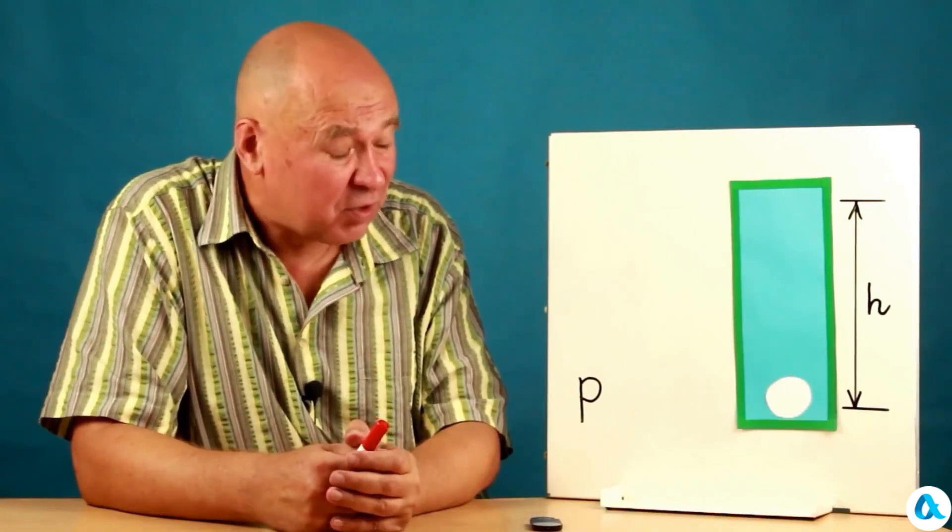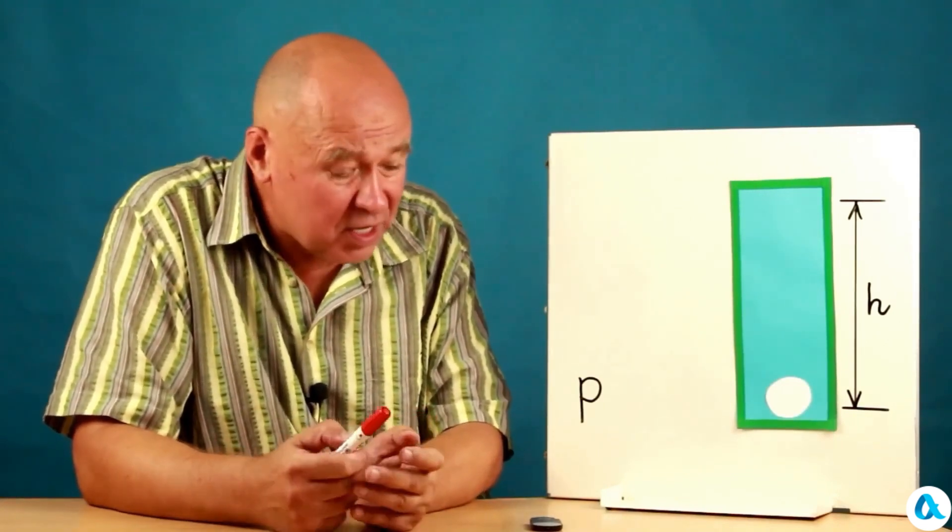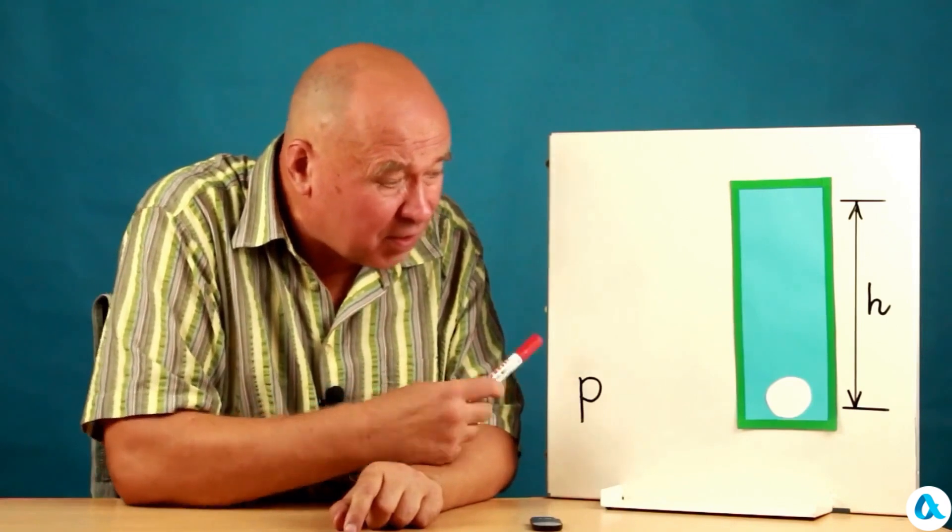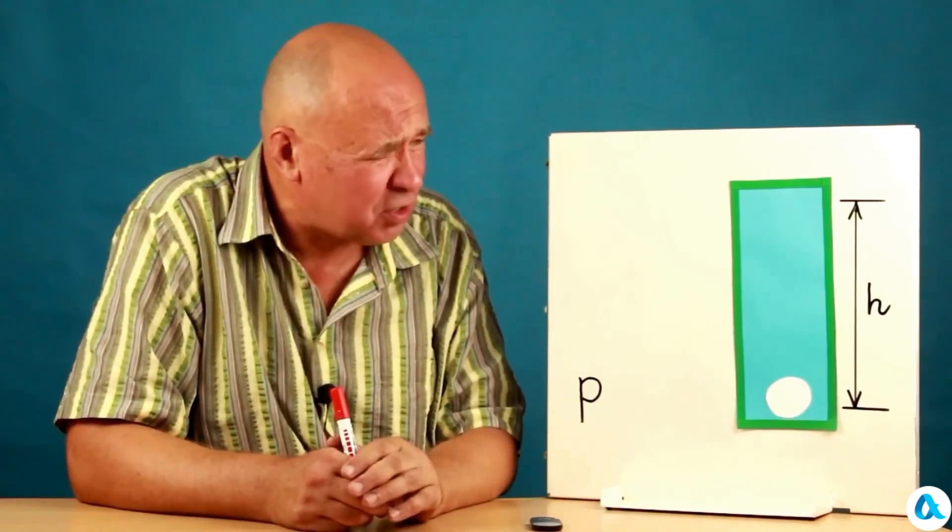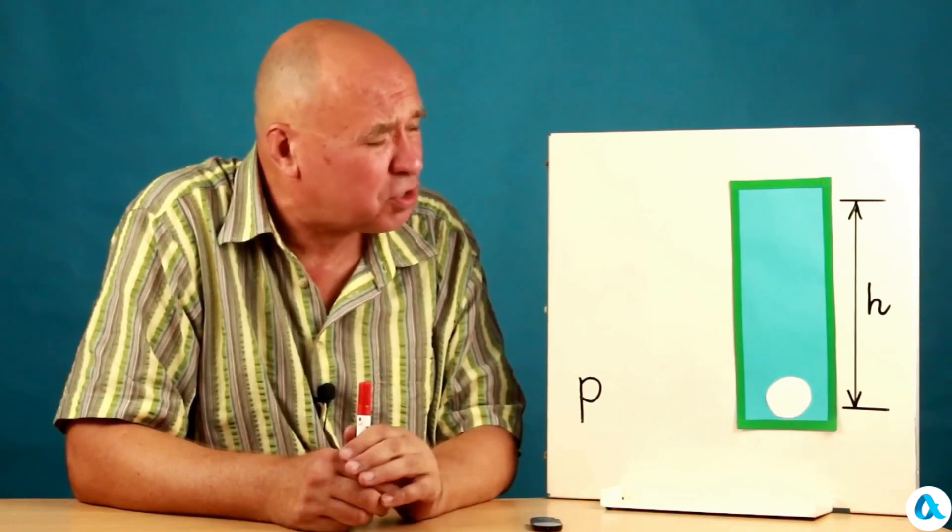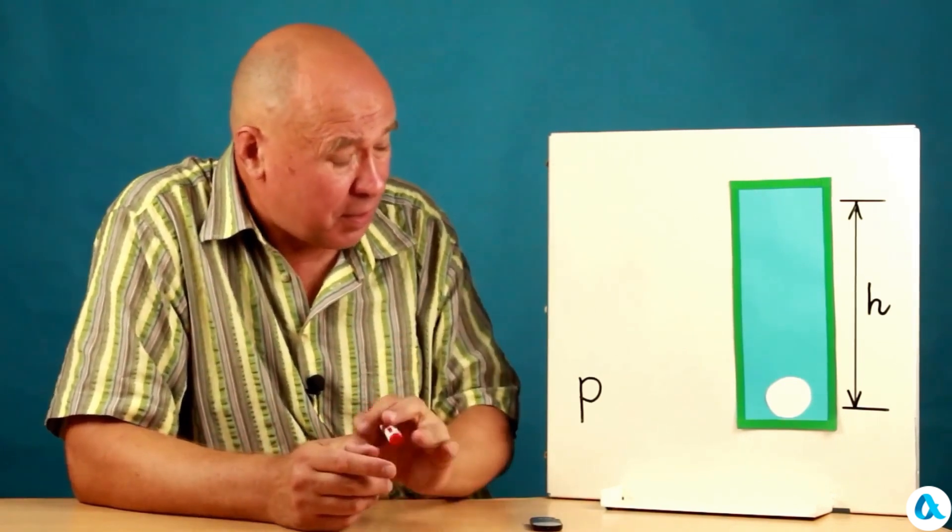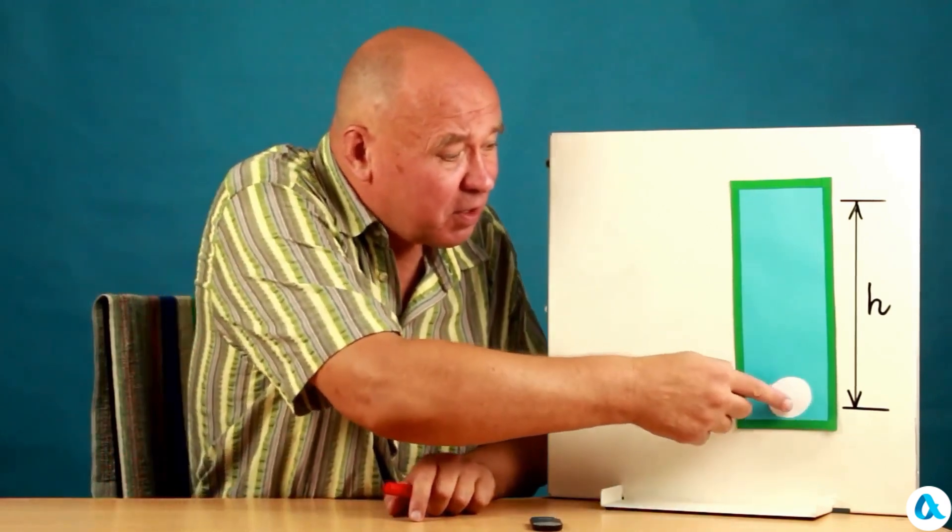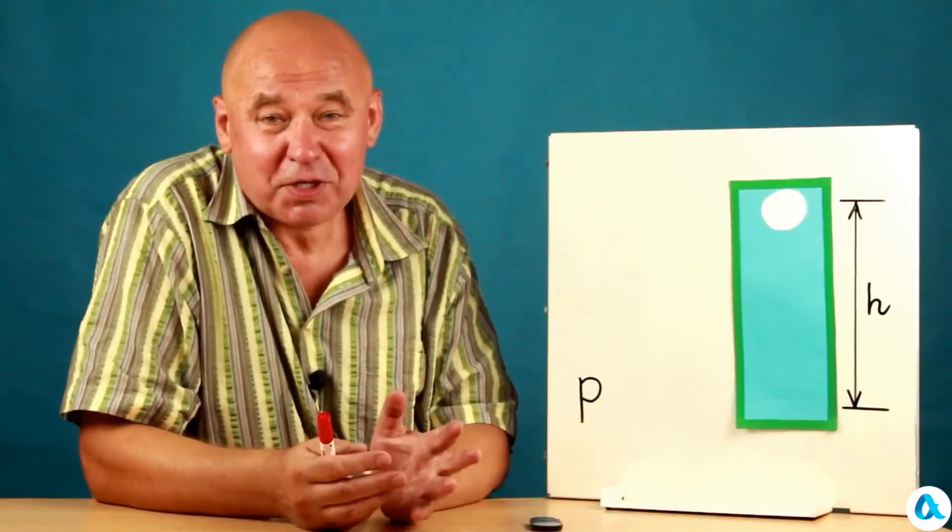And here are the conditions of our problem. The bubble is currently at the bottom of the vessel. Let the pressure at the bottom be p, which includes atmospheric pressure plus hydrostatic pressure and possibly some additional pressure that has been pumped into the vessel. This is not important. And now at this point in time the bubble rises up to a height h.